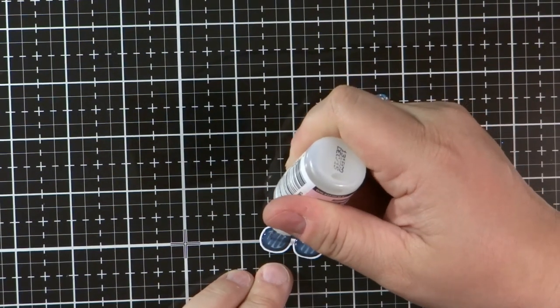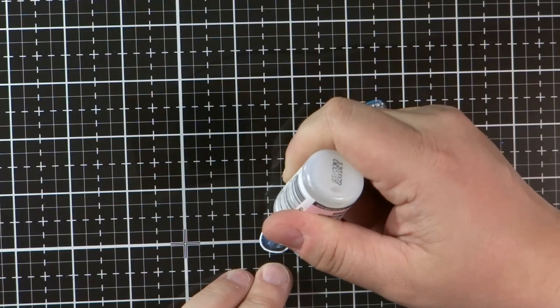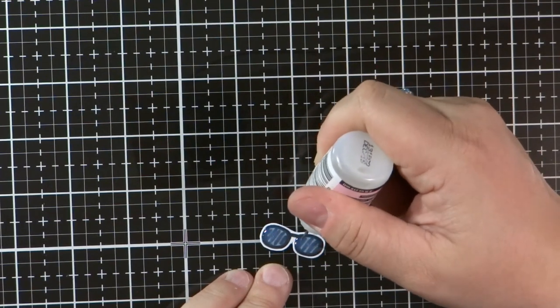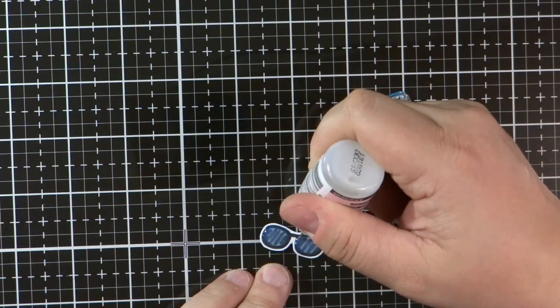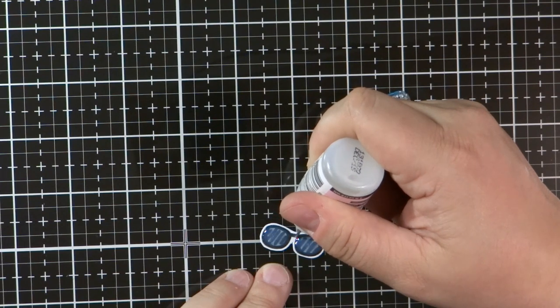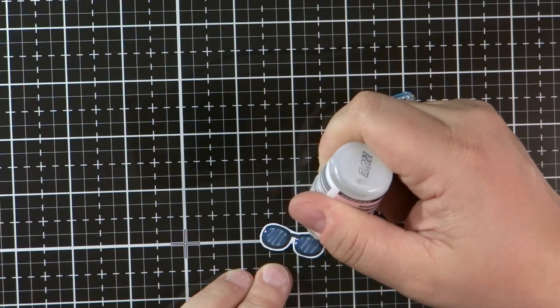And then I wanted the sunglasses to have a gloss shine to them. So I'm going to coat them in glossy accents. I set those aside and I was really good about not touching them while they dried.